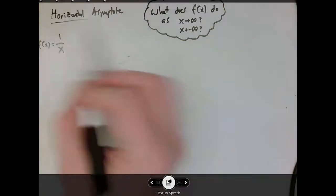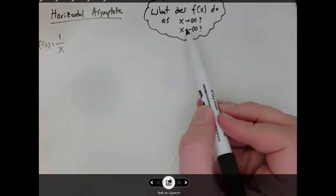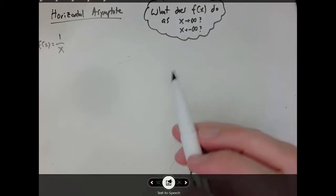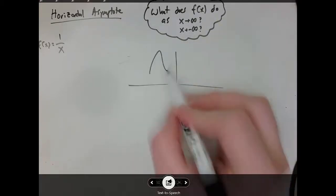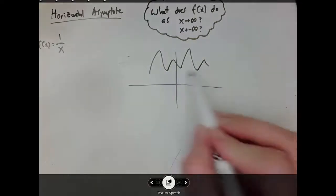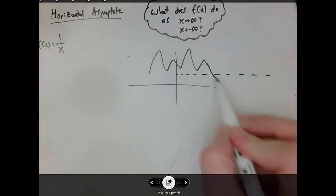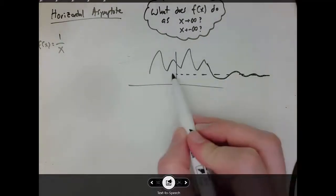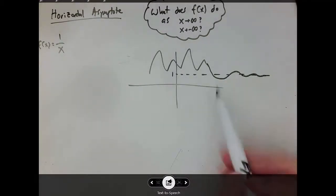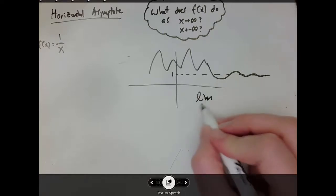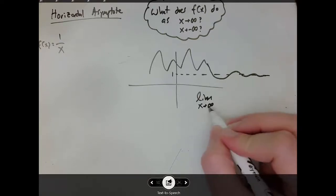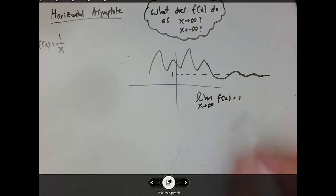A horizontal asymptote just describes what the y values are doing as x approaches infinity or negative infinity. So if you've got some crazy function that looks like craziness, but for very large x values it's getting closer and closer to one, then you can say that limit as x approaches infinity of your function equals one. And this is just another way of saying that you have a horizontal asymptote at one, because your function is approaching the y value of one as x gets larger and larger.